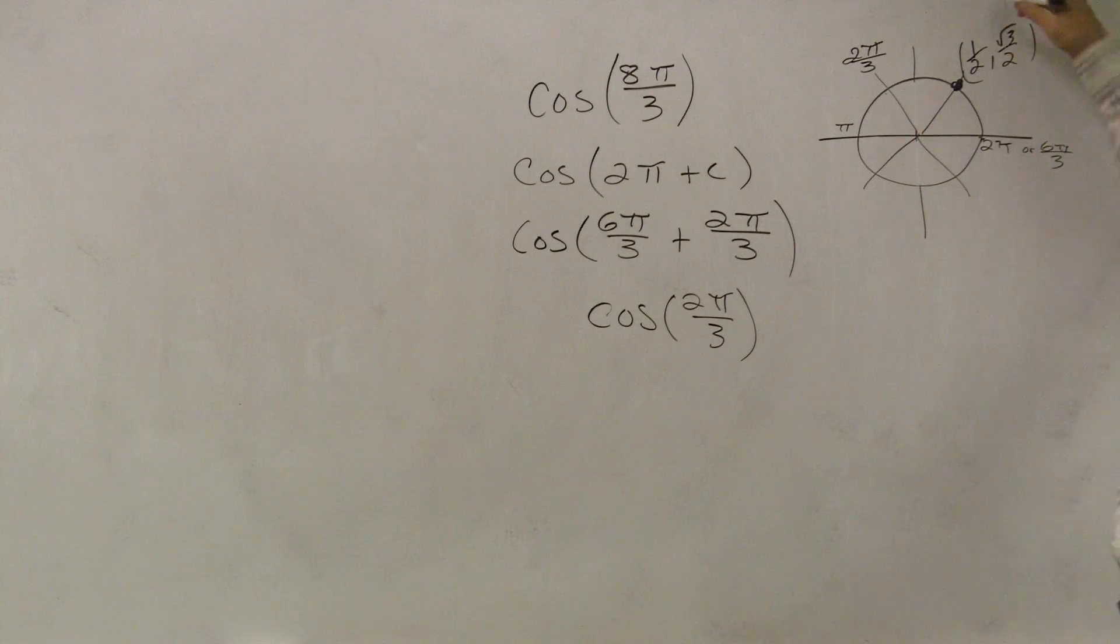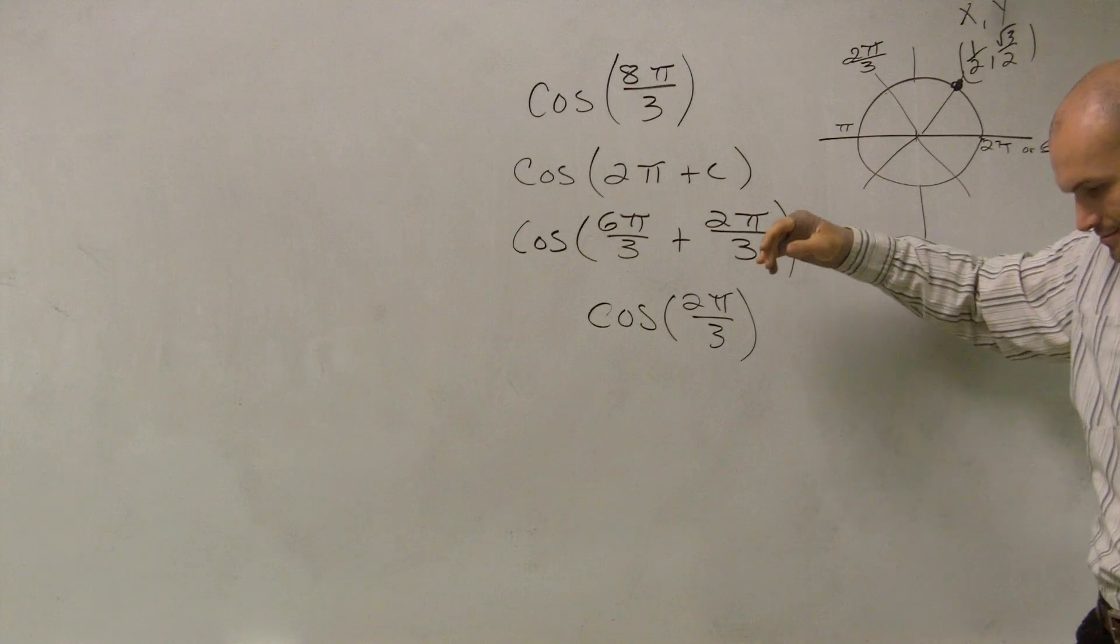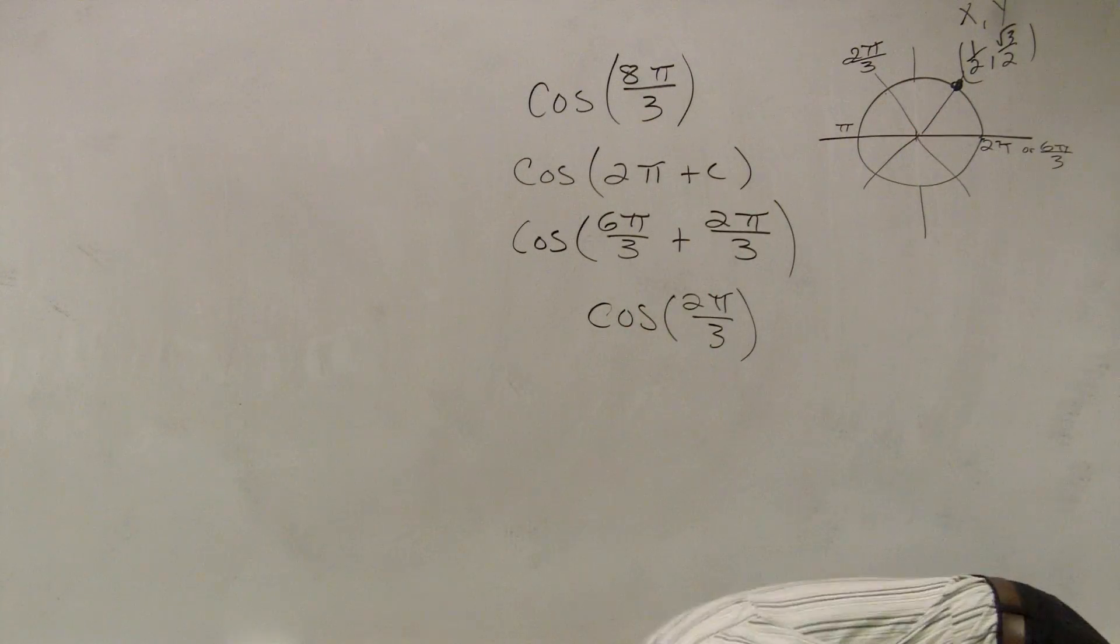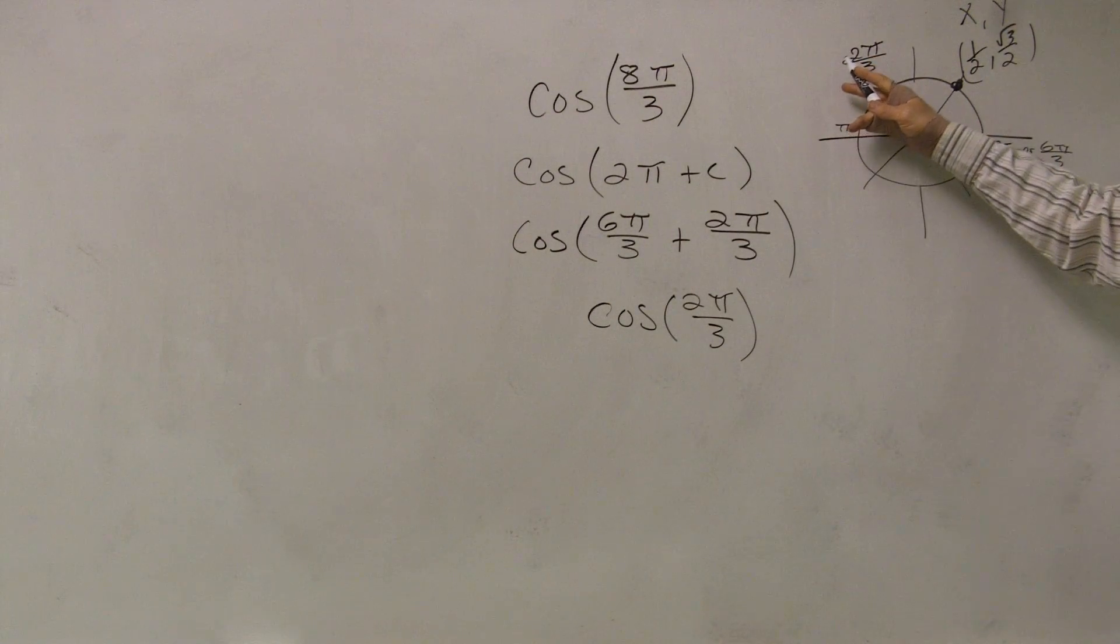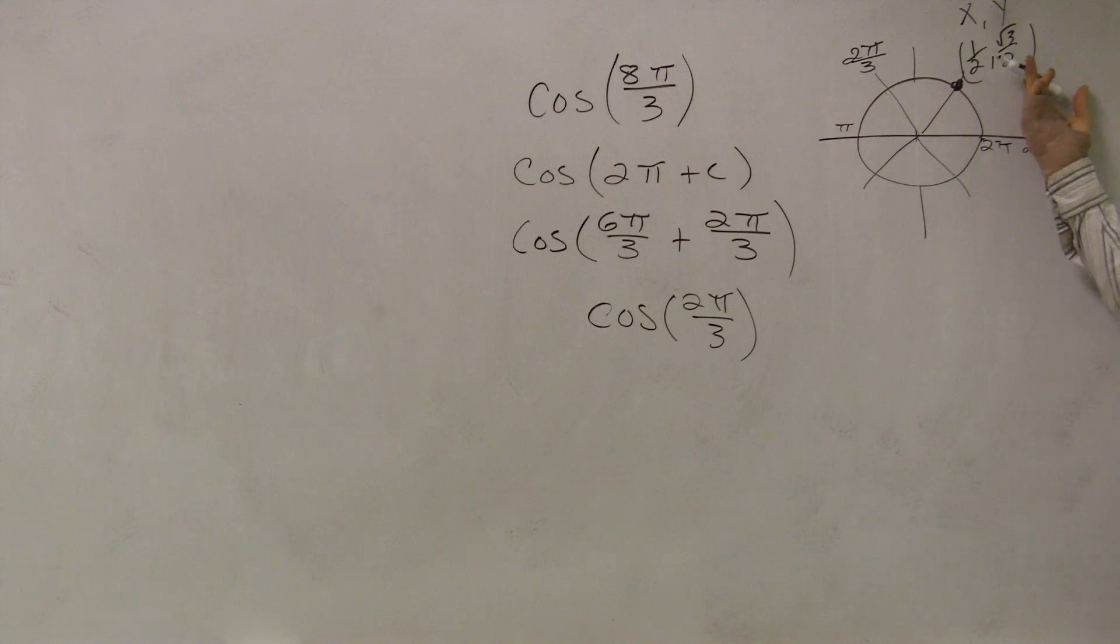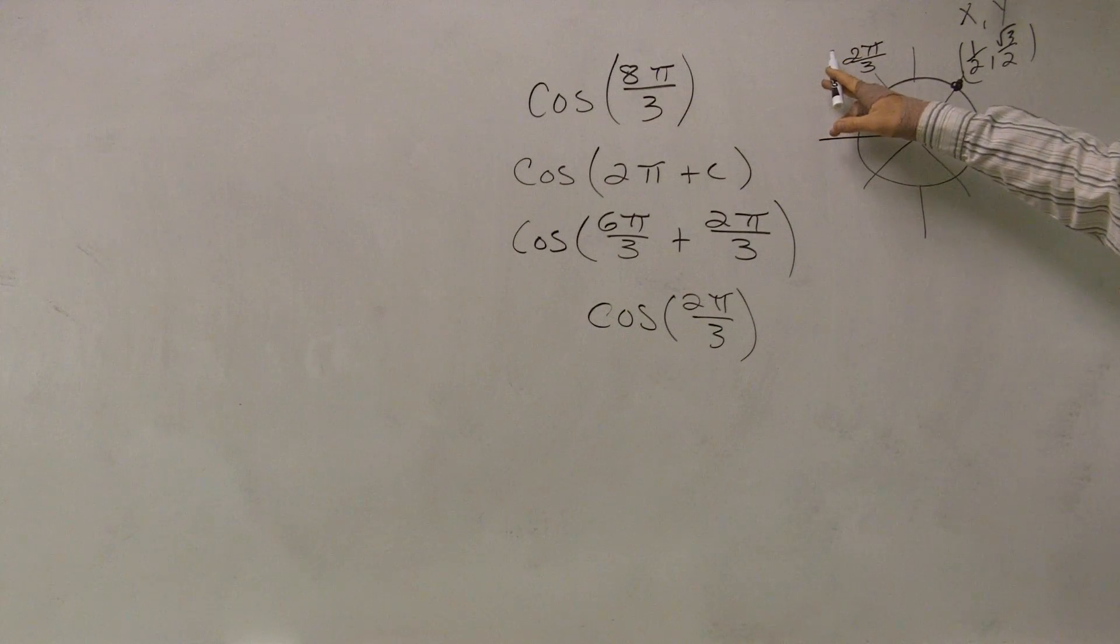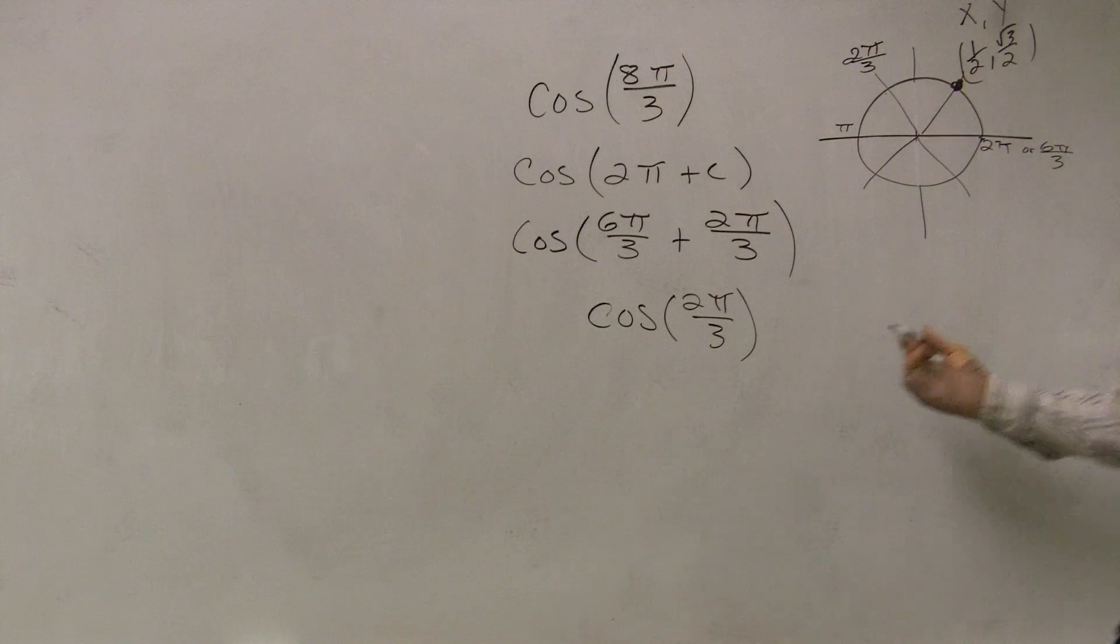Now, if I want to find the cosine, remember, that's your x value. Well, I want to find the x value for this point over here. Well, look what happens. This is just a reflection about my y-axis, correct? So therefore, it's giving me a negative 1/2.